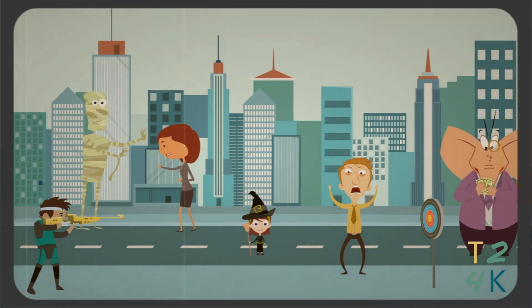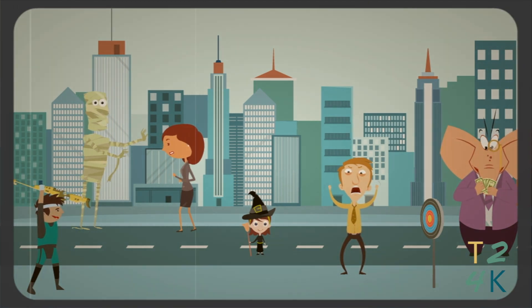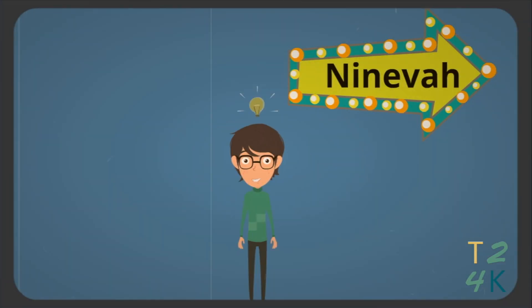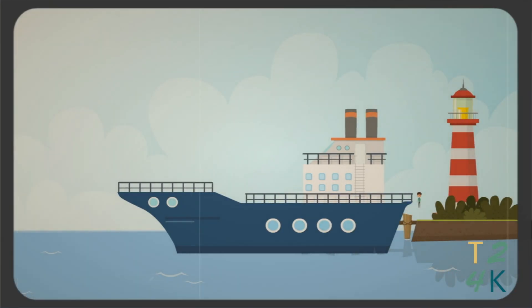Nineveh was kind of a scary place. They definitely were not worshiping God and following his rule. So Jonah was a little bit scared. Before he even got there, he decided he was going to run away. Instead of following God's plan, he took off.